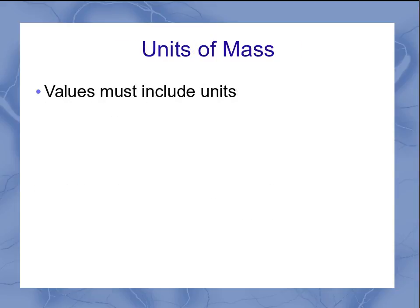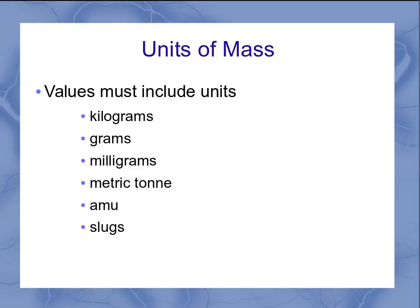When it comes to units of mass, any particular measurement has the value — the number — but it also has the units. So what are some of the units available when we're measuring mass? Here's a list of a few of them: kilograms, grams, milligrams — those are probably ones you're well familiar with. The metric ton is another one. AMU is the atomic mass unit — that's a very small mass used for measuring individual atoms and molecules.